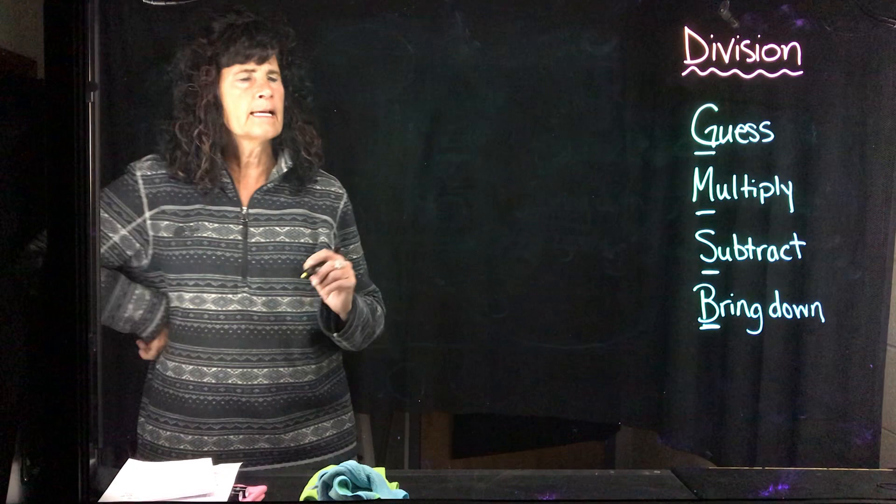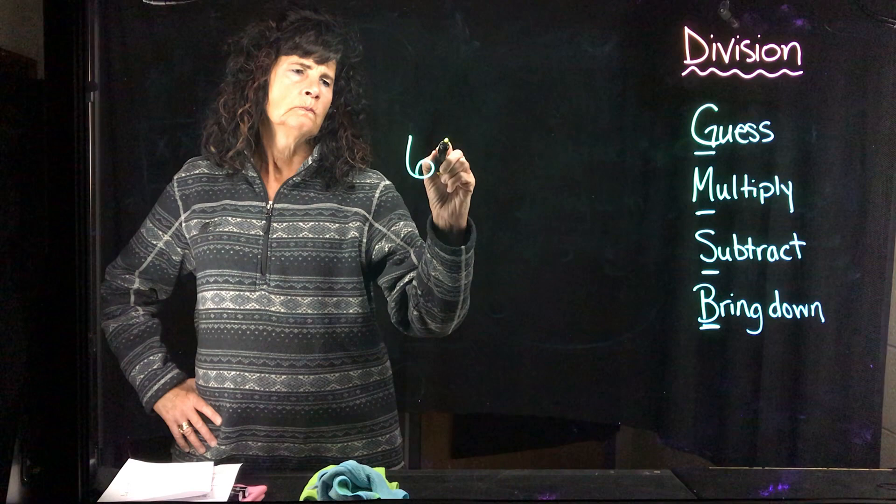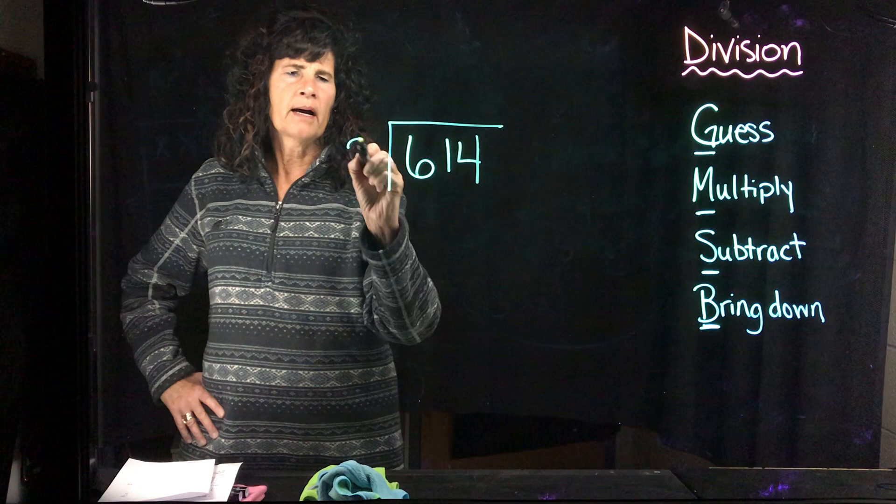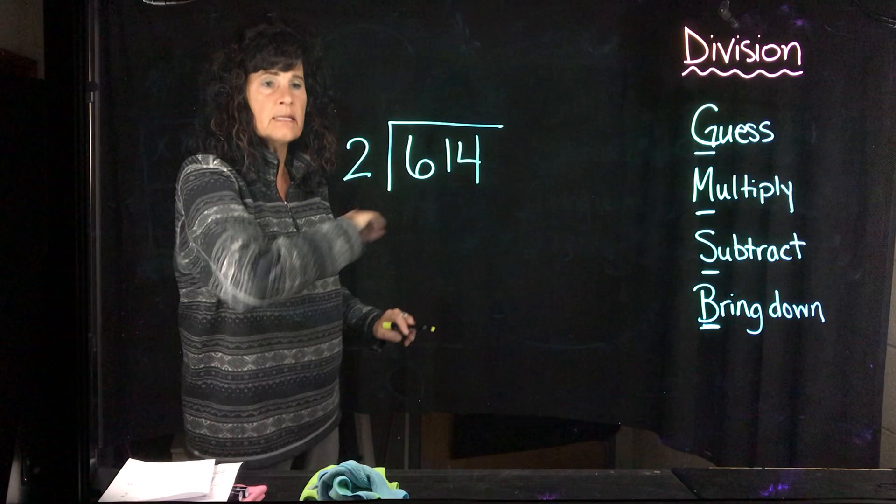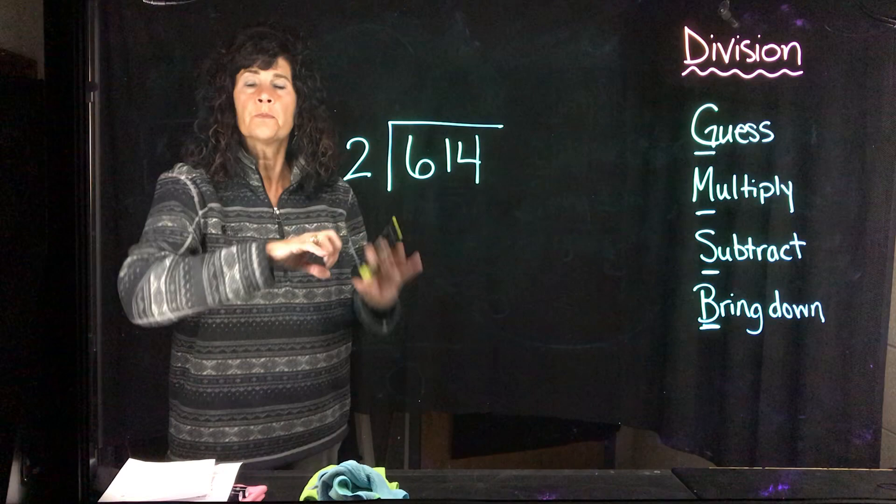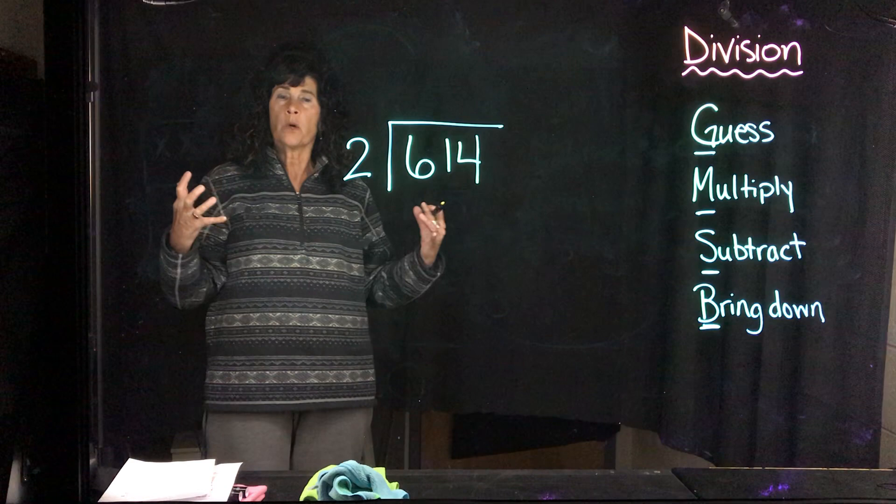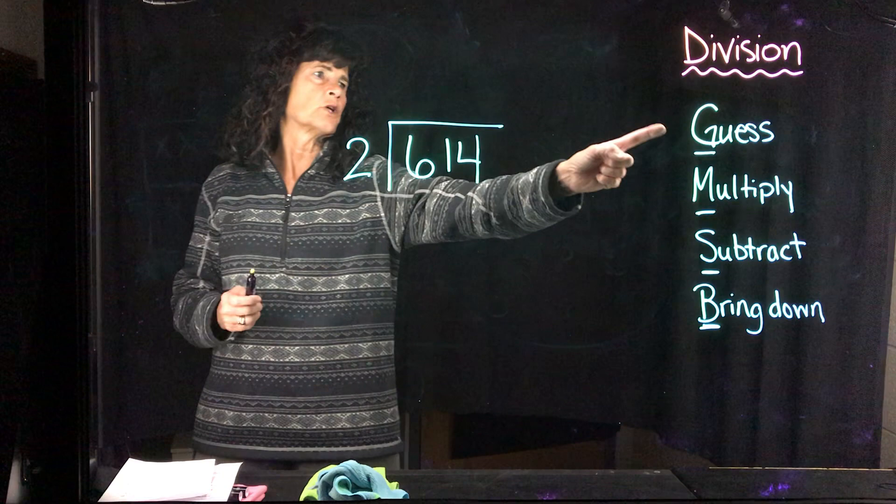Alright, let's say I had the number 614 and I'm going to divide that by 2. And as a reminder, this is my dividend - the number being divided. This is my divisor - the number of groups that I'm dividing this big number into. And up here will be the answer or the quotient, which is the number that one group gets.